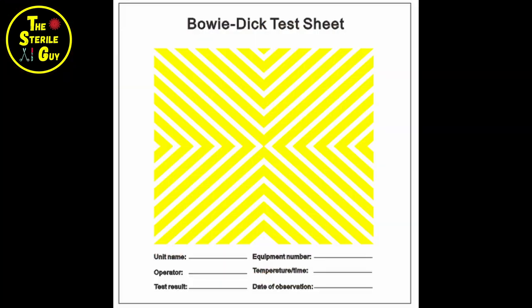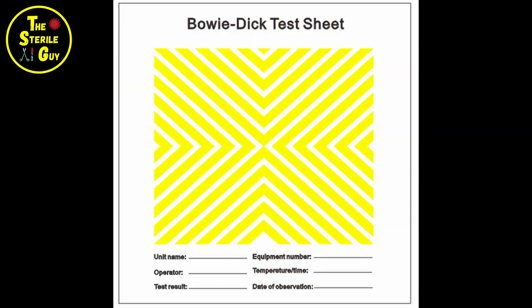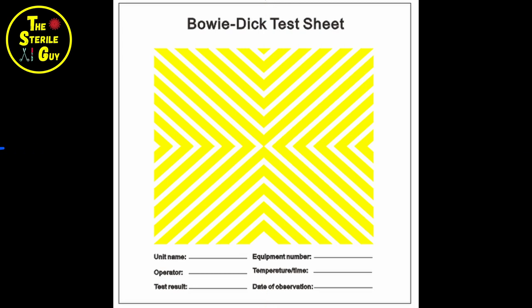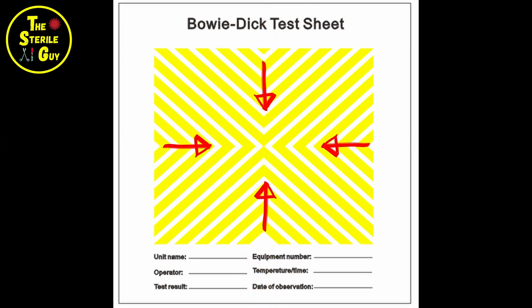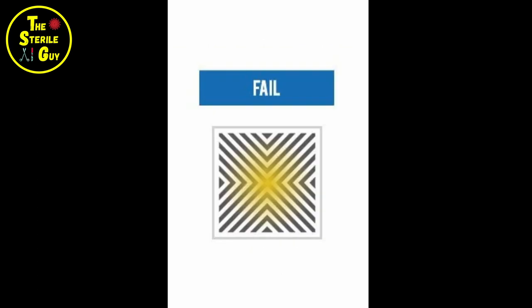The Bowie-Dick works in a similar fashion. The Bowie-Dick is basically a deck of cards with a steam indicator card in the very center. All the cards have some air between them and in the wrap as well. Same process: the vacuum pump pulls all the air out and then steam penetrates deep into the pack. If not all the air is removed before steam, your test will look uneven or incomplete — which is a no-go.